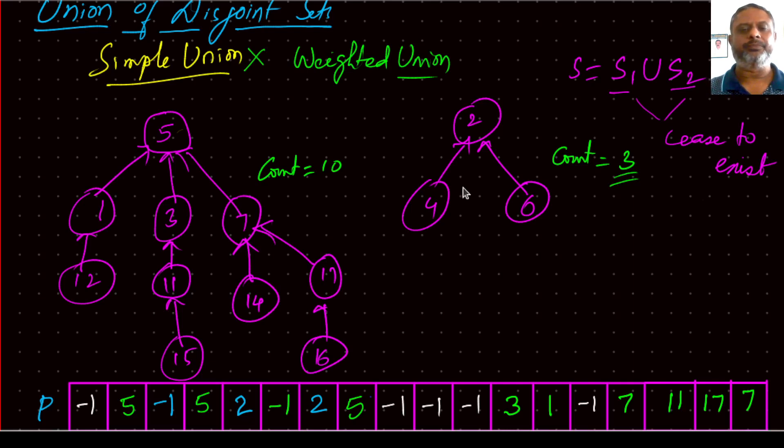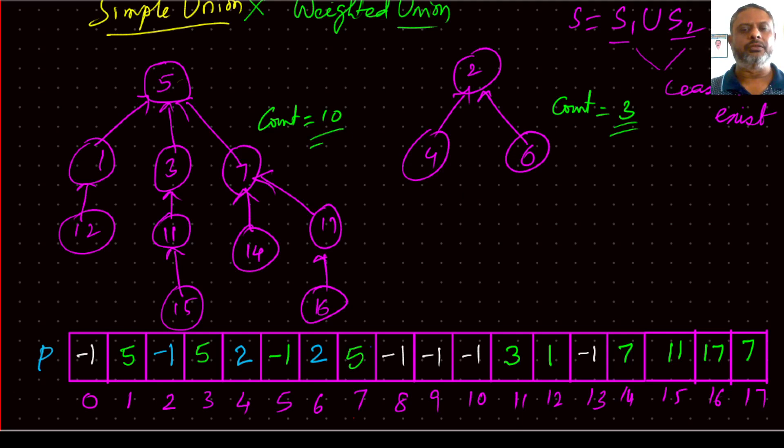So it is advisable to make smaller set as a subset of a bigger set instead of the other way around. So how to know that? The simplest way of doing is to remember these counts. So where can we remember the counts? Yes, you know, the two places are still unused. That is location 2 and location 5, which are trying to tell us that they are the roots.